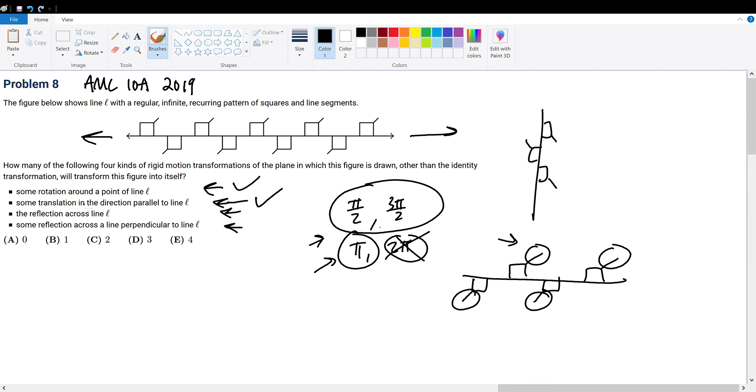What about a reflection across the line L? If we reflect it across line L, what will it look like? Well, if we reflect it, the up and down squares will change their positions and the diagonals will now point towards different directions. So this will point here and this will point here and this will point here. This is obviously changing orientation, and we do not want to change orientation.